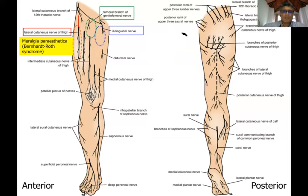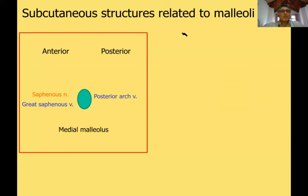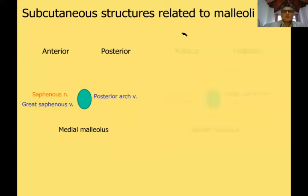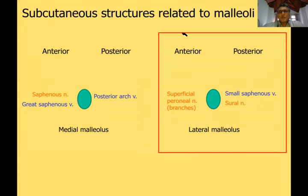Using the medial malleolus as a bony landmark: anterior to the medial malleolus, you find the saphenous nerve in front and the great saphenous vein behind. Posterior to the medial malleolus, you get the posterior arch vein, an important clinically significant tributary of the great saphenous vein. On the lateral side, in front of the lateral malleolus you get the superficial peroneal nerve, and behind it you get the small saphenous vein and the sural nerve.